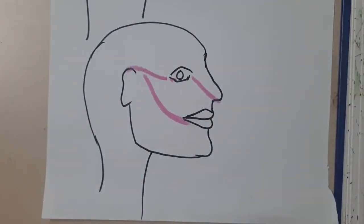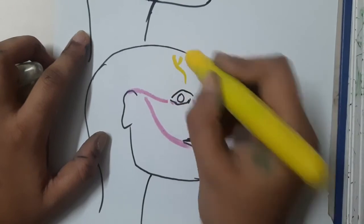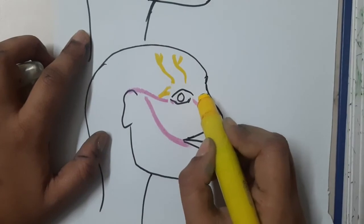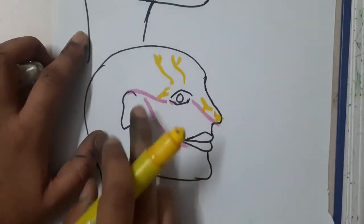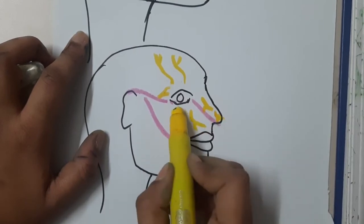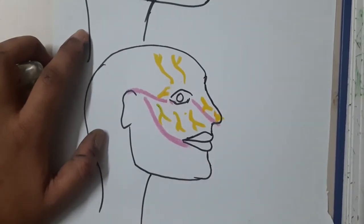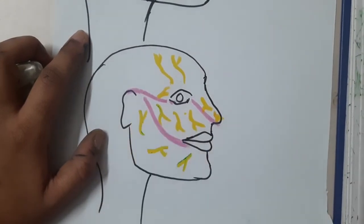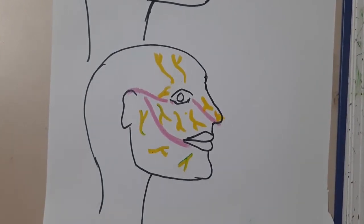To summarize: in the ophthalmic division we have the supratrochlear, supraorbital, lacrimal, infratrochlear, and external nasal nerves. In the maxillary division we have the infraorbital, zygomaticofacial, and zygomaticotemporal nerves. In the mandibular division we have the mental, buccal, and auriculotemporal nerves. Thank you for watching.